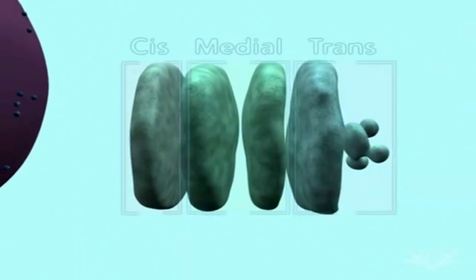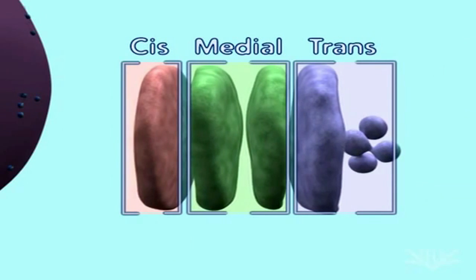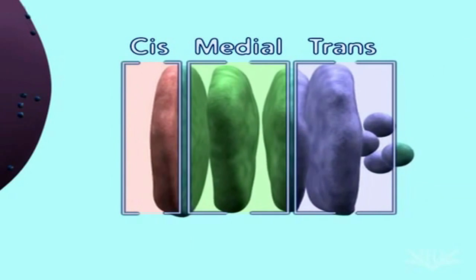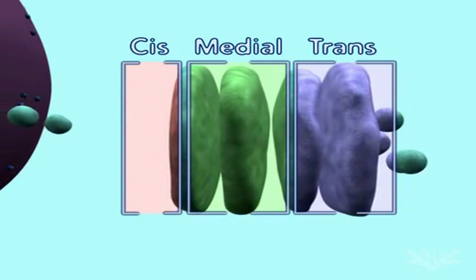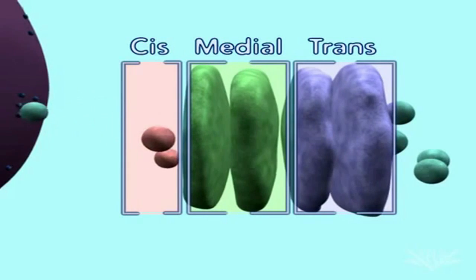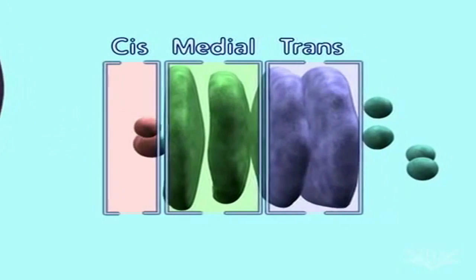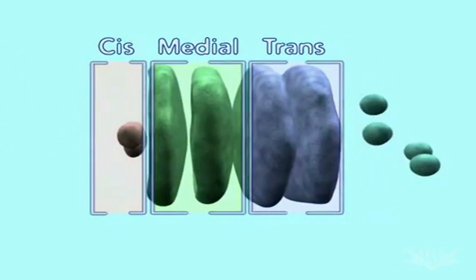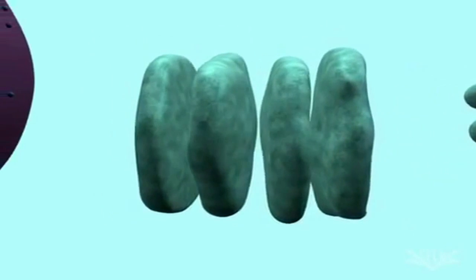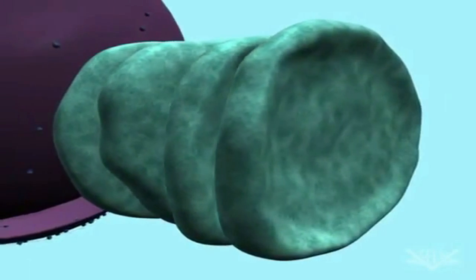Movement through the Golgi occurs in waves. The cis-cisterna becomes part of the medial Golgi cisternae. Behind it, a new cis-cisterna is formed by the fusion of vesicles from the ER. Meanwhile, one of the medial cisternae migrates and becomes the new trans-cisterna. Collectively, this process is known as the cis-maturation model.